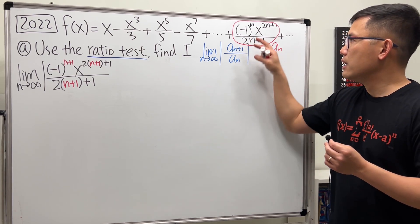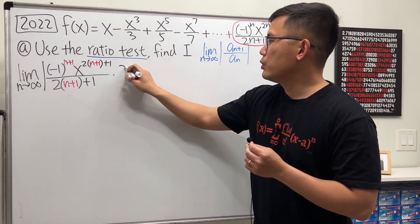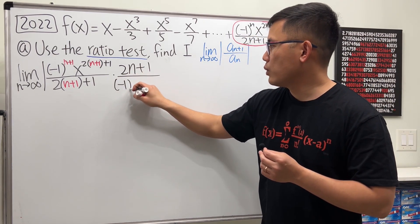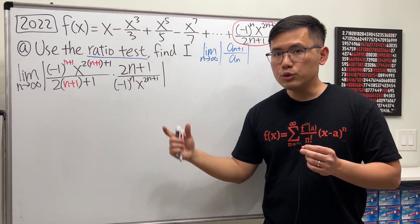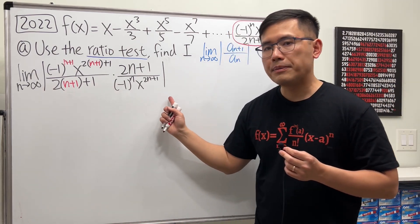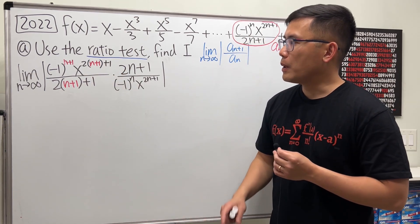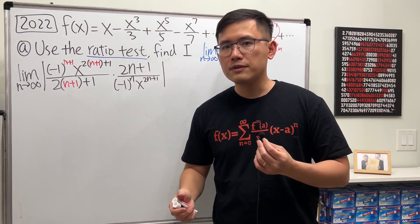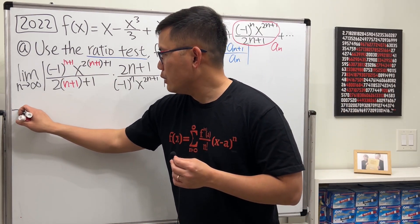Then we multiply by 1 over a_n, which is the same as multiplying by its reciprocal. So we get 2n+1 over negative 1 to the n times x to the 2n+1. Now we need to simplify and take the limit. Be careful — do not get rid of the absolute value because we don't know what x is yet; it can be negative. However, negative 1 to any power inside an absolute value is just 1, so those factors disappear.